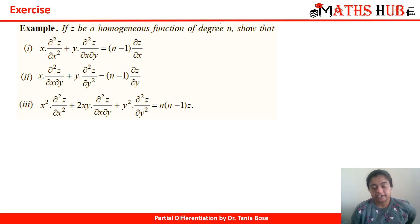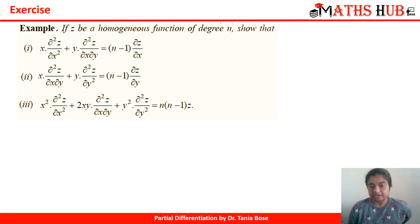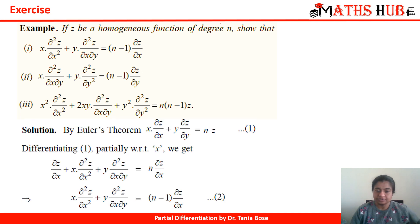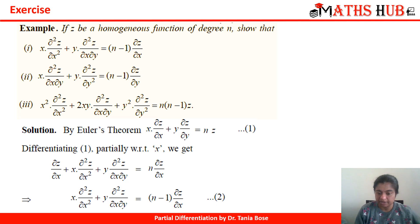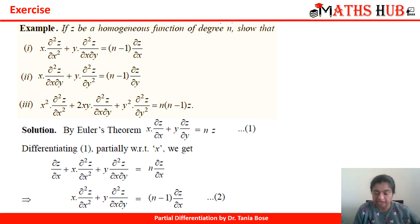Now let's prove a second-order derivative result. If z is a homogeneous function of degree n, we need to show that x·(∂²z/∂x²) + y·(∂²z/∂x∂y) = (n−1)·(∂z/∂x). Starting from Euler's theorem: x·(∂z/∂x) + y·(∂z/∂y) = n·z (equation 1). Differentiating equation 1 with respect to x and applying the product rule: (∂z/∂x) + x·(∂²z/∂x²) + y·(∂²z/∂x∂y) = n·(∂z/∂x).